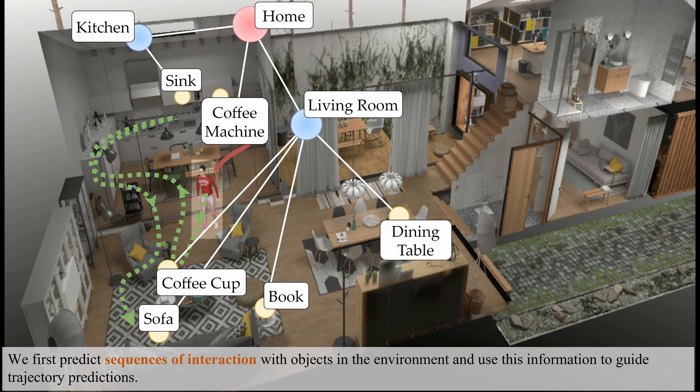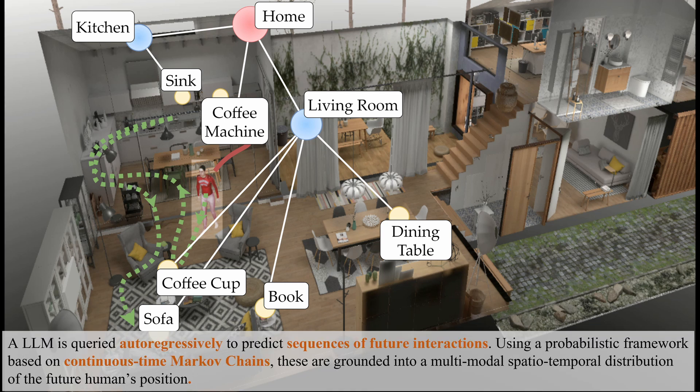We first predict sequences of interaction with objects in the environment and use this information to guide trajectory predictions. A large language model is queried autoregressively to predict sequences of future interactions. Using a probabilistic framework based on continuous-time Markov chains, these are grounded into a multimodal spatiotemporal distribution of the future human's position.